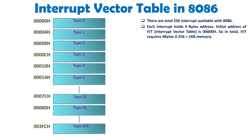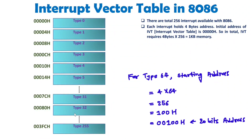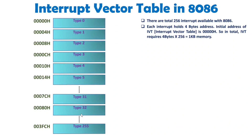You can directly calculate the address of any random type. For example, if you want the address of type 64, then 64 × 4 gives you the initial address of type 64. You should also know how much memory the IVT acquires. Each type holds 4 bytes, and the initial address starts from 0000h. IVT requires 4 bytes × 256 types, which equals 1 KB of memory.